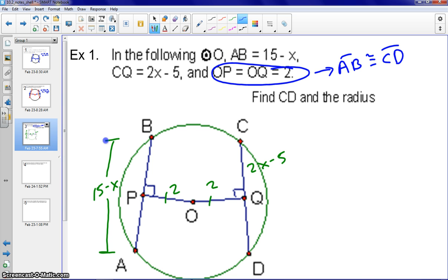Remember from section 10.1, we know if it's perpendicular, that the chord is bisected. So we'd have CQ is congruent to QD, so this QD would also be equal to 2X minus 5. And then we would know,